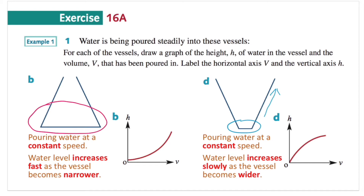If you observe this graph, v represents the volume on the horizontal axis and h represents the water level on the vertical axis. The curve is increasing slowly at first but gradually becomes faster. As more water is being poured in, the height of the water increases much faster because the vessel is getting narrower.